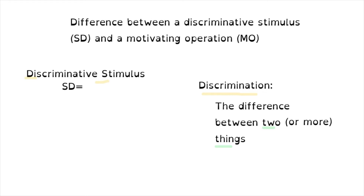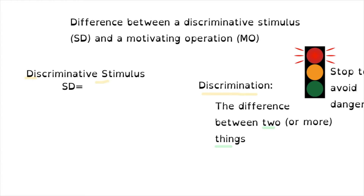For example, we learn to stop at red lights. When we are learning to drive we may not know what the signals mean when we're younger, but we learn over time that when we see the red light we will stop to avoid a ticket or avoid an accident. Same thing goes for green lights — we learn that this means go. We have discriminated the difference between a green light and a red light.